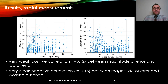We ran a set of analyses to quantify the accuracy of the method. For radial measurements, we computed the value of error and ran two correlations — one between error and length of the object, and one between error and working distance. There was a very weak positive correlation between magnitude of error and radial length, and a very weak negative correlation between magnitude of error and working distance.